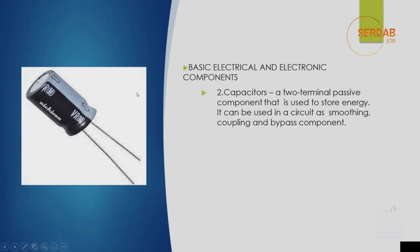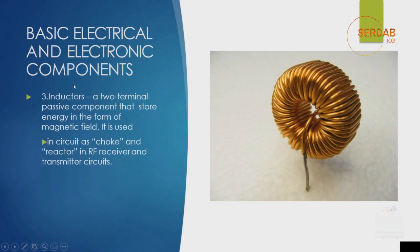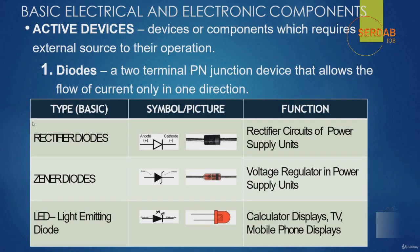The third component is an inductor. As you can see, this is an inductor — it's a two-terminal passive component that stores energy in the form of a magnetic field. It is used in circuits as a choke and reactor in RF receiver and transmitter circuits.